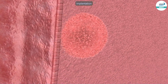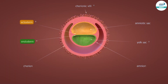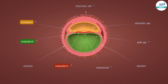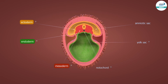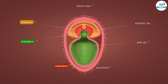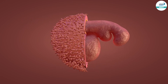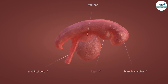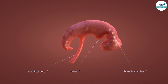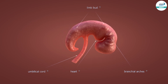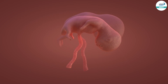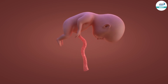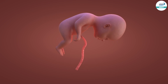The blastocyst is the structure involved in implantation — the connection of the blastocyst into the uterine wall. Here you can see chorionic villi, and the three germ layers: ectoderm, endoderm, and mesoderm. The notochord, which later converts to the vertebral column, is a characteristic feature. The amniotic sac and yolk sac also form, and slowly organ development begins — including the heart — while the umbilical cord connects through the mother's body, and branchial arches and limb buds develop during the gestation period.